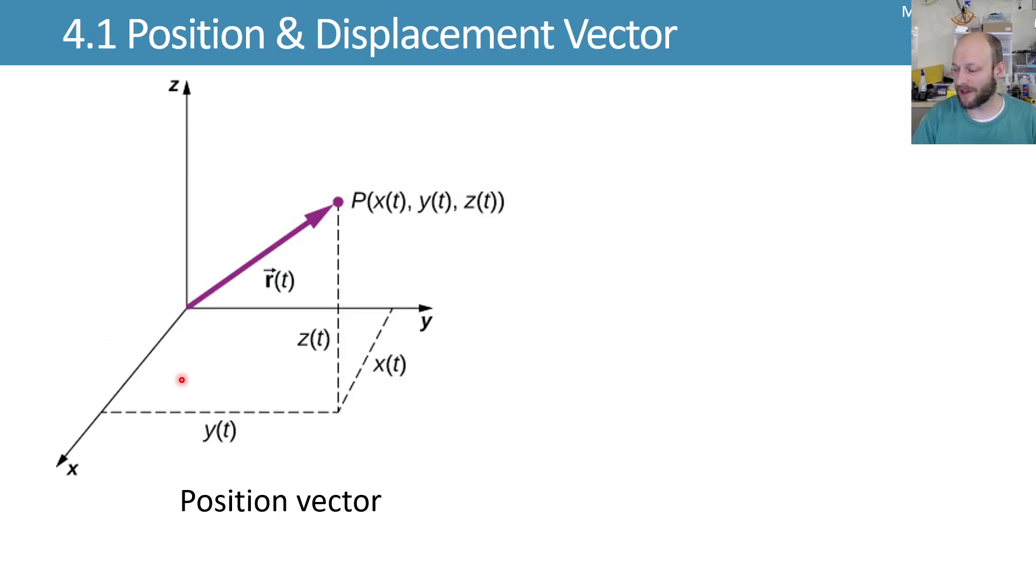So vectors. We have our position vector, and in three dimensions you have your x, y, and z axes. Those axes represent unit vectors going in those directions using i-hat, j-hat, and k-hat. A unit vector just means it has magnitude 1 with no units on it. It just gives you a direction. You can multiply a number by the unit vector to give you a vector going in that direction. So i, j, and k correspond to x, y, and z.